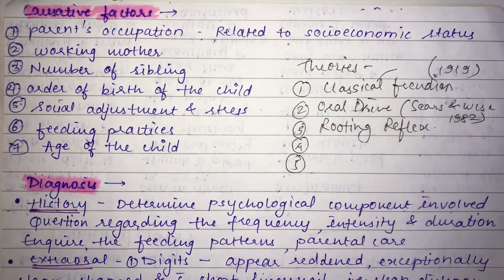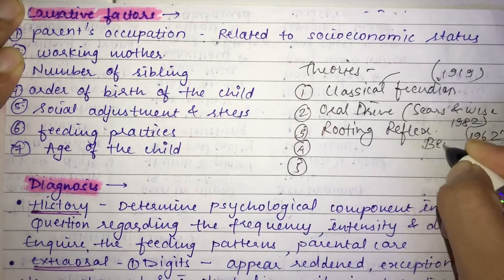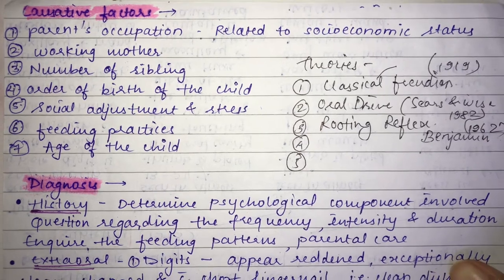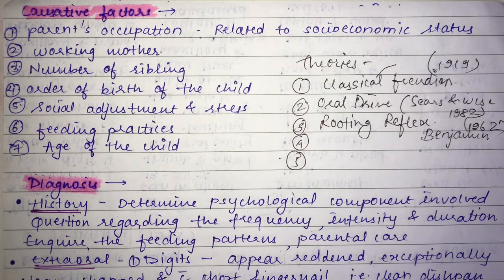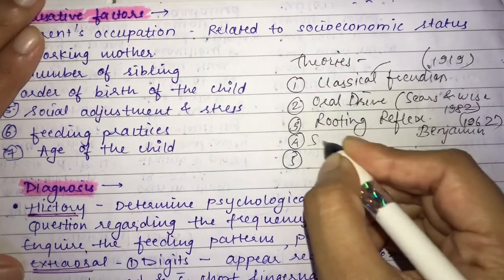The Rooting Reflex theory was given by Benjamin in 1962. It states that the rooting reflex is the movement of the infant's head and tongue towards an object touching the cheeks. Benjamin suggested that thumb sucking arises from the rooting and placing reflexes, which are common to mammalian infants during the first three months of life.